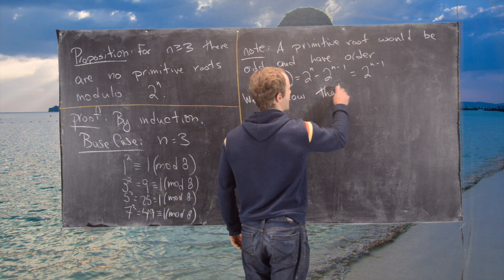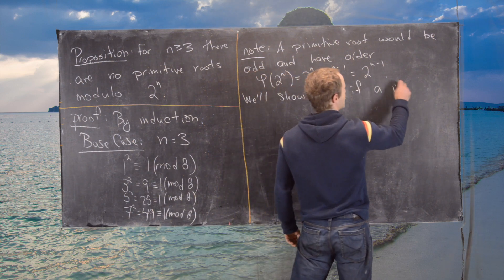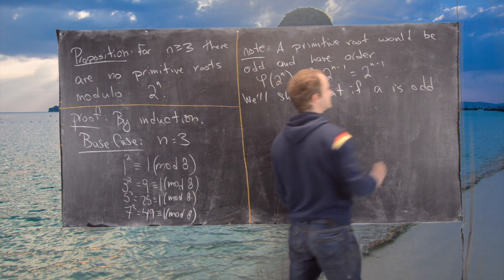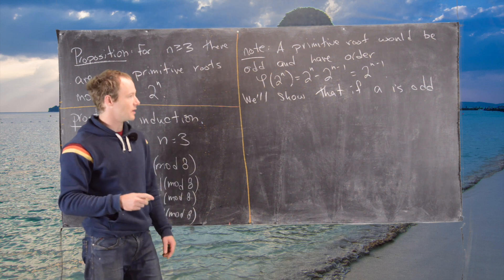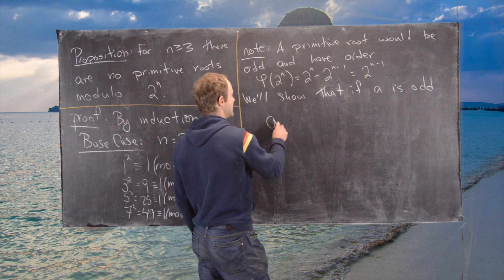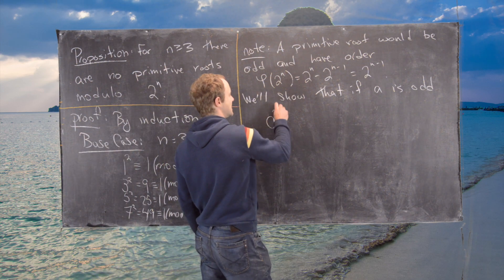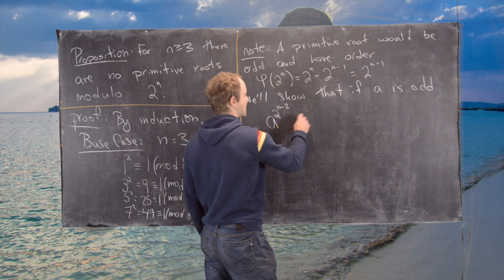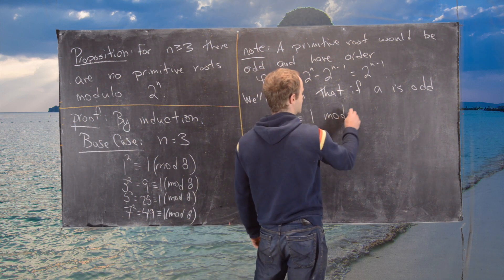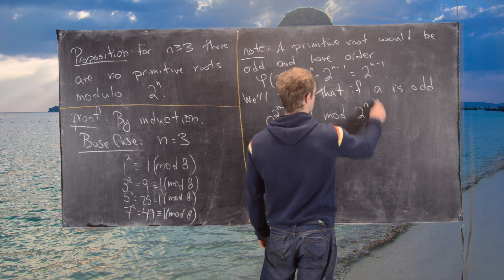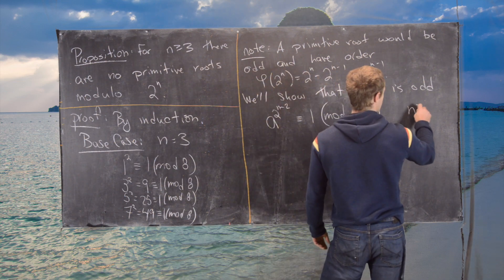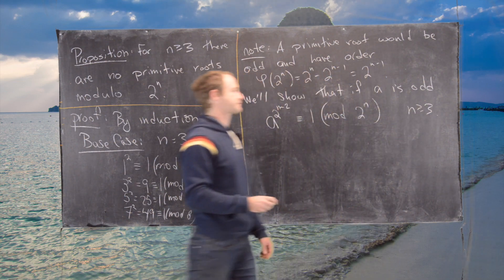So what we'll show is that everything, in fact, has order 2 to the n minus 2. So we'll show that if a is odd, and I shouldn't say order, I should say order at most, a to the 2 to the n minus 2 is congruent to 1 mod 2 to the n. And this is for all n bigger than or equal to 3.